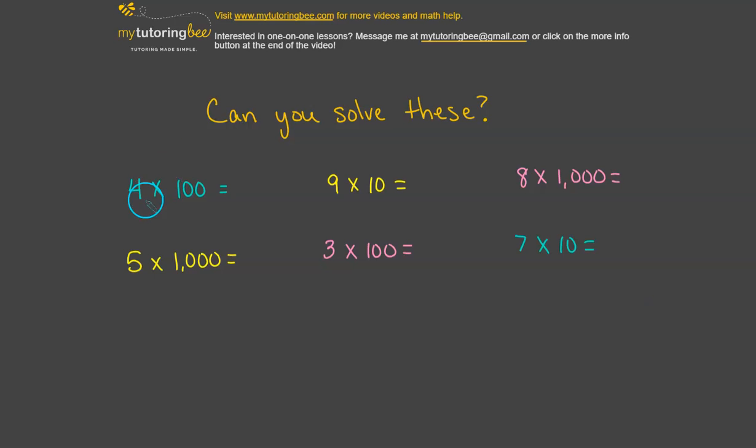All right. Let's see how you did. So 40 times 100, you should have gotten 4,000. 600 times 10, that's 6,000. 8 times 1,000, that's 8,000. 5 times 1,000, that's 5,000. 3 times 100 is 300. And then 7 times 10 is 70. So hopefully you got all of those.